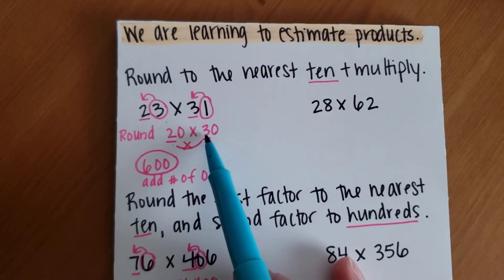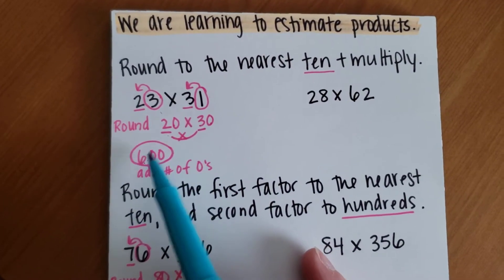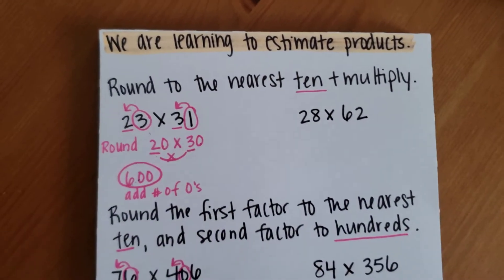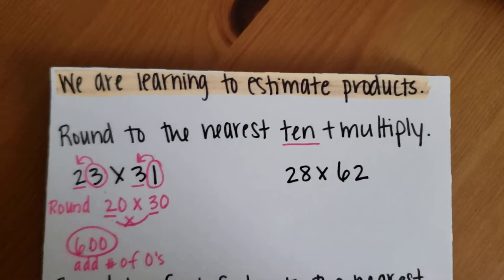I multiply my front number, so 2 times 3, which equals 6. And then I just add the number of zeros, which is 2. So over here I'm going to do that same thing, but do it with you guys.